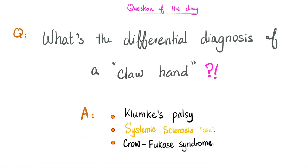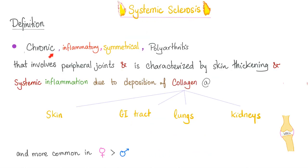What is the differential diagnosis of a claw hand? A claw hand could be Klumpke's palsy, could be systemic sclerosis, or could be Crow-Fukase syndrome. Systemic sclerosis is a chronic inflammatory, symmetrical polyarthritis that involves peripheral joints and is characterized by skin thickening and systemic inflammation everywhere.